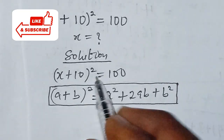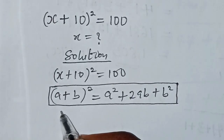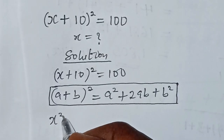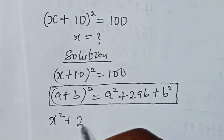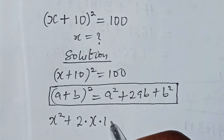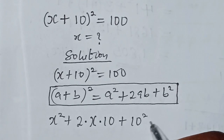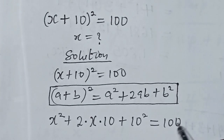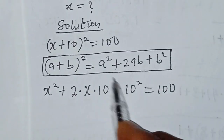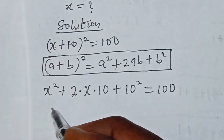We use this identity to approach the question first, taking care of the left-hand side. The left-hand side can then be written as x² + 2 × x × 10 + 10² = 100. This is what we get when we expand the left-hand side, and that can be properly written as x² + 20x + 10².